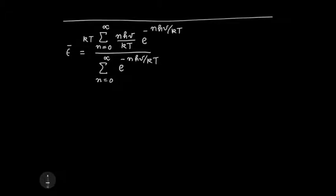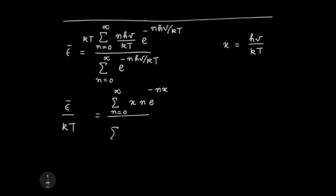First we simplify the equation a little bit. We consider x as h nu by kT. Remember that epsilon bar was kT earlier, so I just write epsilon bar by kT on the left-hand side. Then you see on the right-hand side it becomes quite a simple expression: n equals zero to infinity, x times n times e to the minus nx.